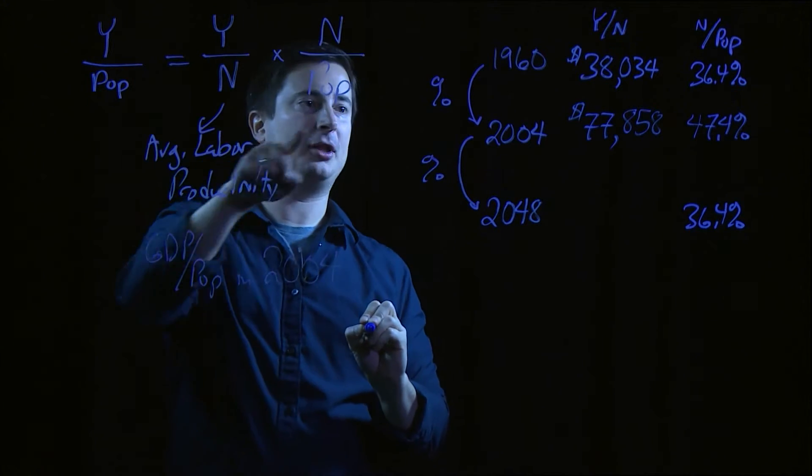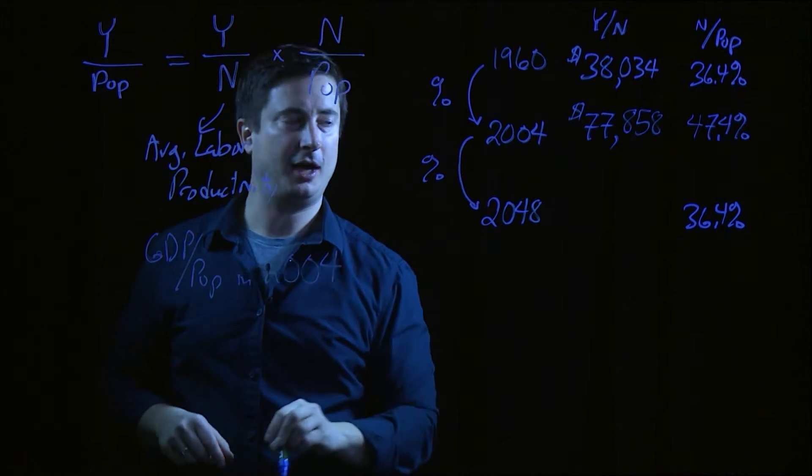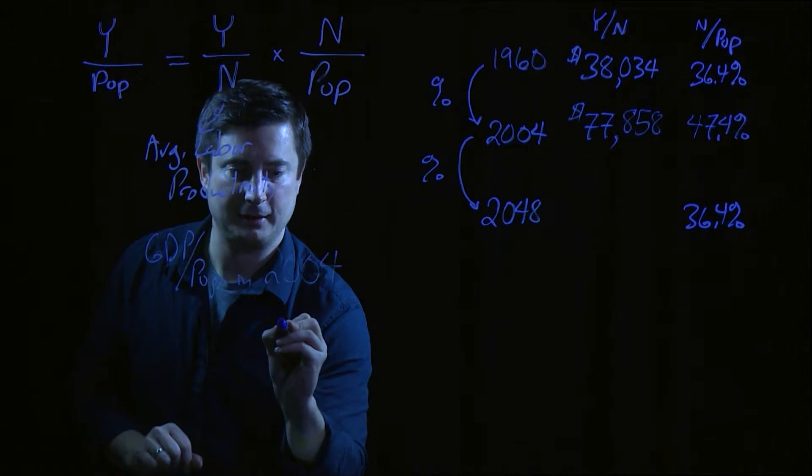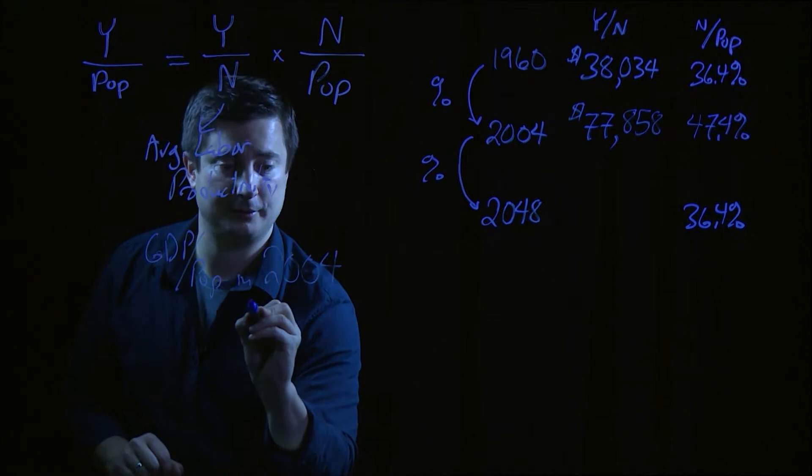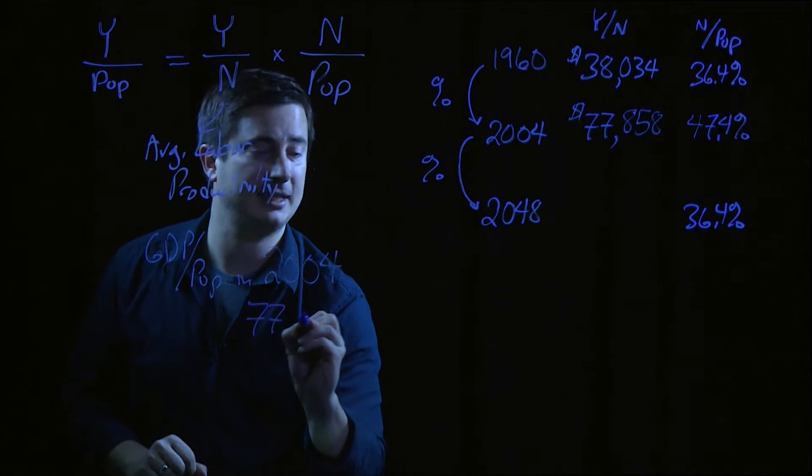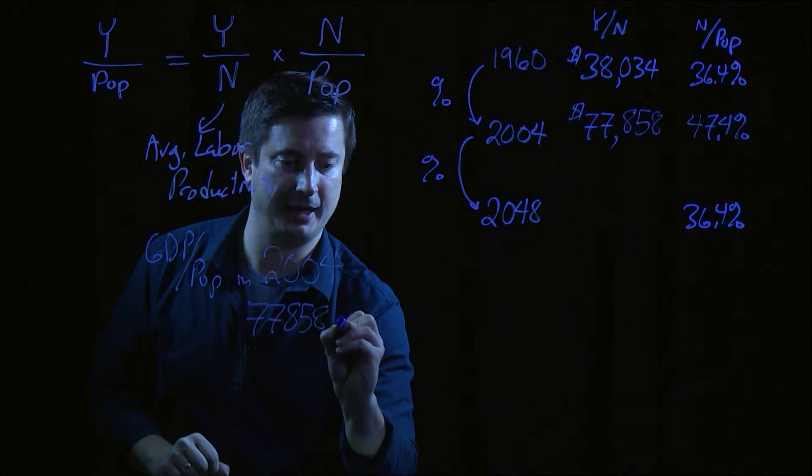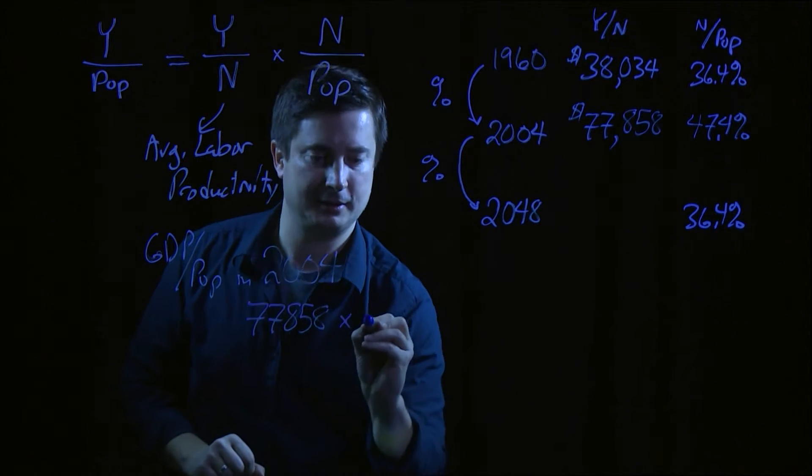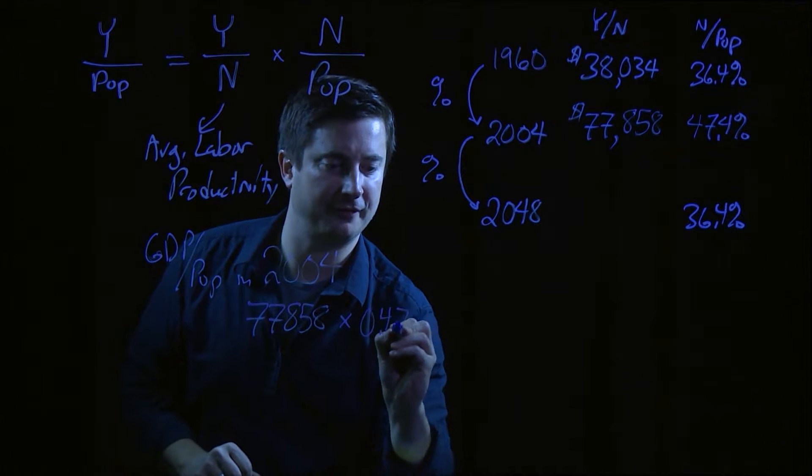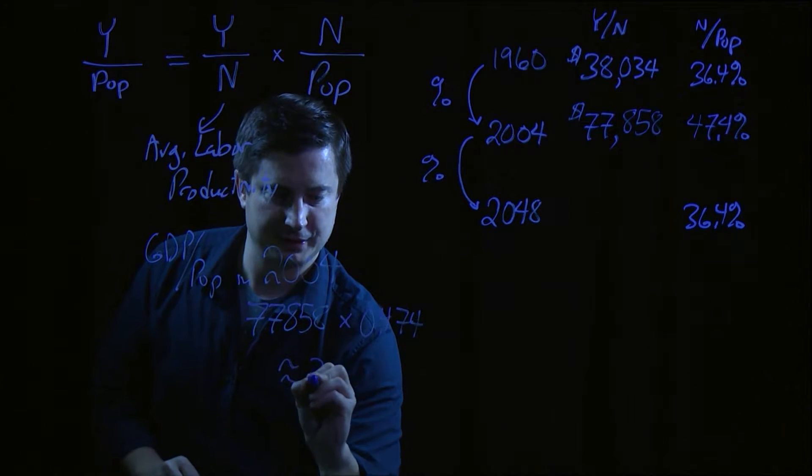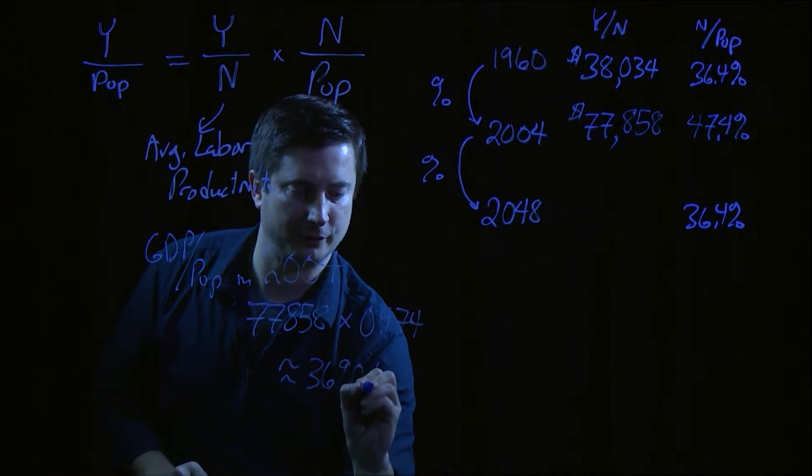Well, applying our formula right here, we can simply read it off the numbers we have here. And that, I'll simply 77,858 times 0.474, or roughly speaking, it's $36,904.